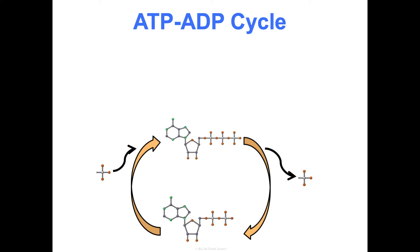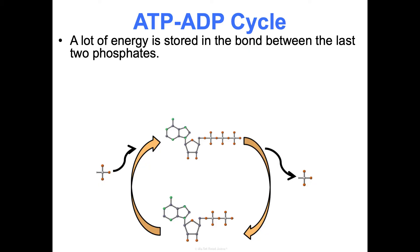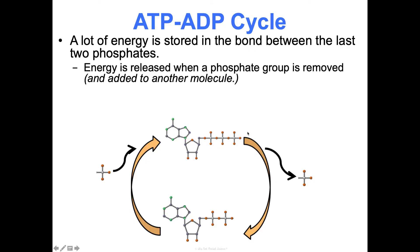Here's how it works. Remember from concept one: anytime a bond is formed, energy gets released; anytime a bond is broken, energy is being absorbed. All chemical reactions require bonds to be broken and formed, so we're looking at the big picture. There's a lot of energy stored in this bond between the last two phosphates and it's very unstable, so it actually wants to be ripped off. When we remove that phosphate group, we have to input a little energy to break the bond, but not a lot. That phosphate gets removed and added to another molecule, and when it does, a lot of energy is released.